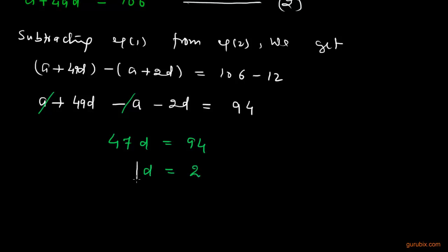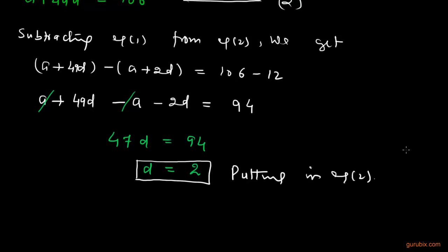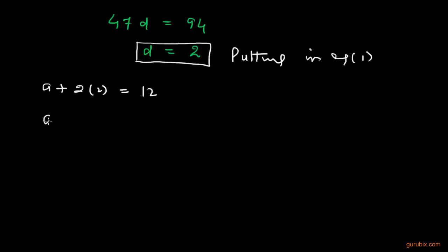This is the value of the common difference. Now we shall put this common difference in equation 1: A plus 2D, and the value of D is 2, equals 12. So A equals 12 minus 4. This means A equals 8.